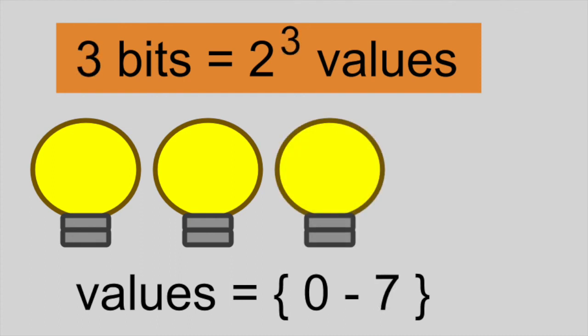With 3 bits, we can represent 8 different values, 0 through 7.